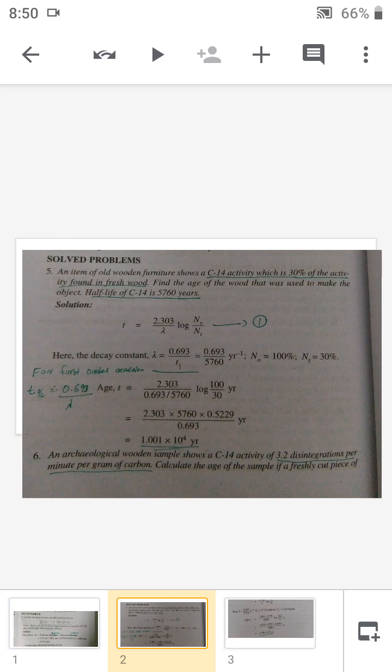First of all, we have to find out the lambda value. For every first-order reaction, t-half equals 0.693 divided by lambda. If we know t-half, we can easily find out the lambda value. If we substitute lambda in the first equation, we can easily find out the years. So the answer is 1.001 times 10 to the power 4 years.